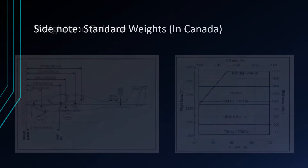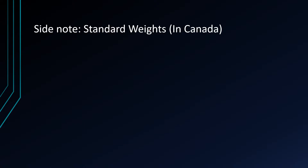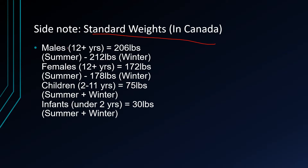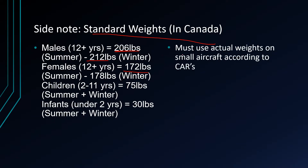Before we go ahead, let's take note of standard weights — at least here in Canada. For a large airplane, like an airliner, you obviously can't weigh every passenger individually. So you use something called standard weights. For males 12 years and up, that's 206 pounds — bumped up from 200 because people are getting larger. In winter it's 212 due to extra clothing. Females are a little less, and there are separate weights for kids and infants. For smaller aircraft, according to the Canadian Air Regulations, you actually use real weights, which is what we'll be doing today.